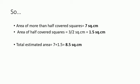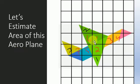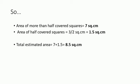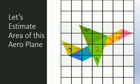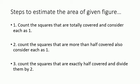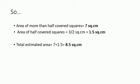The area of more than half covered squares is seven square centimeters — you can count one, two, three, four, five, six, seven. The area of half covered squares is three, but since step three says to divide by two, three divided by two equals one point five square centimeters. So the total estimated area is seven plus one point five, which equals eight point five square centimeters. Thanks a lot!